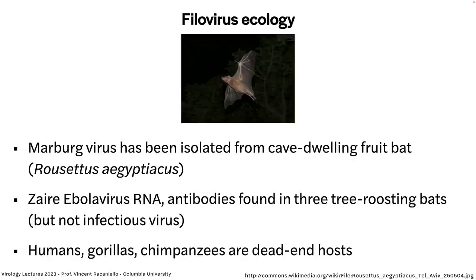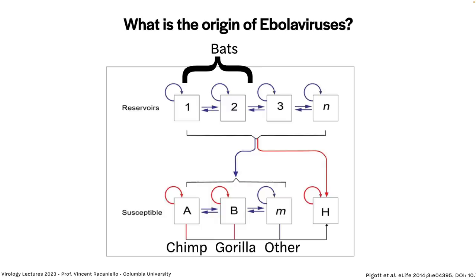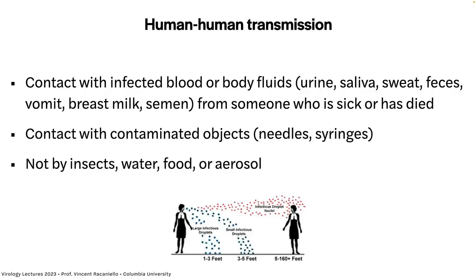The related Marburg virus, which also causes highly lethal hemorrhagic fever, has been isolated from a fruit bat in Africa — that's the confirmed reservoir. We have not isolated infectious Ebola virus from any bat — we have RNA and antibodies, which is suggestive but not proof. We think bats are the reservoir, and humans, gorillas, and chimpanzees are dead-end hosts. Ebola virus is transmitted by very close contact with blood and body fluids — many body fluids contain virus, typically from people who have just died or are being cared for. Also contaminated needles and syringes. Not by insects, water, food, or respiratory droplets.